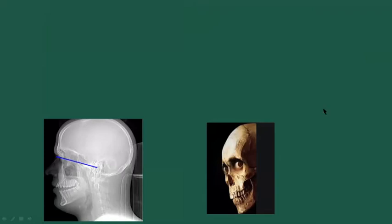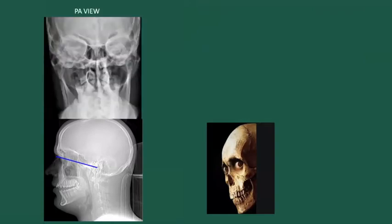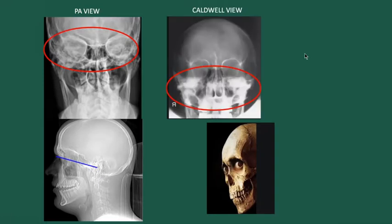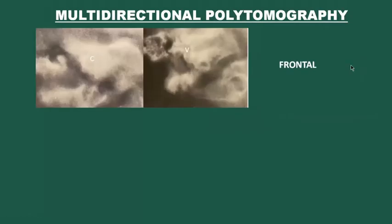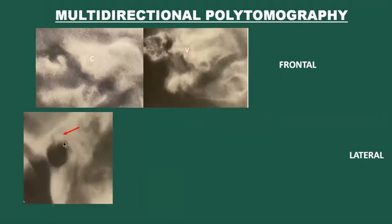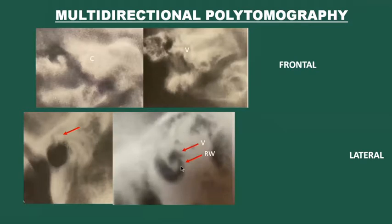In the 60s and 70s, the first-line examination of patients requiring temporal bone imaging was plain film examination. The PA view was performed with the temporal bone projected through the orbits, 0 degrees to the orbitomeatal line. The Caldwell view projected the temporal bone below the orbits, 20 degrees off the orbitomeatal line. The Towne view was an AP view, 37 degrees off the orbitomeatal line at the level of the foramen magnum. Next-line examination was multidirectional polytomography, with coronal images at the level of the cochlea and vestibule, and lateral images at the level of the malleus, incus, round window, vestibule, and internal auditory canal.